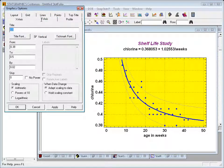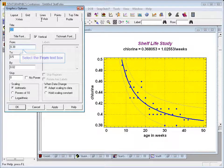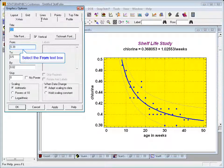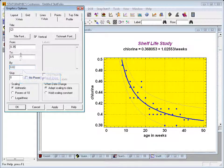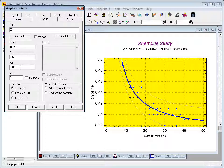Then the y-axis, the title there is currently chlorine. I think that's all right. The scaling I don't much like, though. It's going from 0.38 to 0.5 by 0.02. I think I'll make it 0.35 to 0.5 by 0.05.